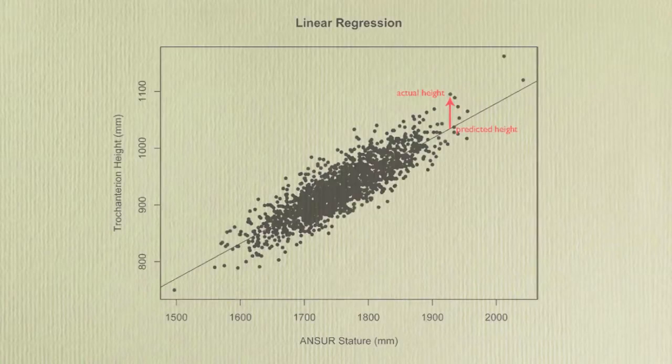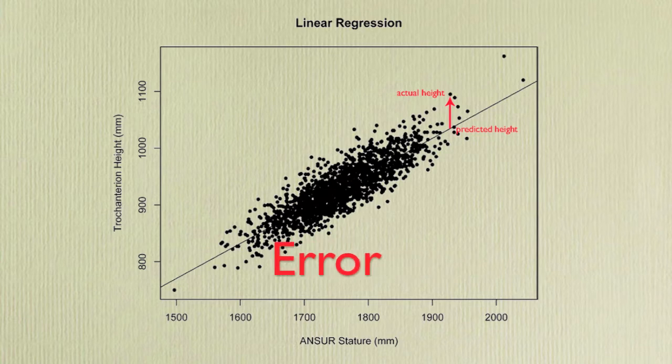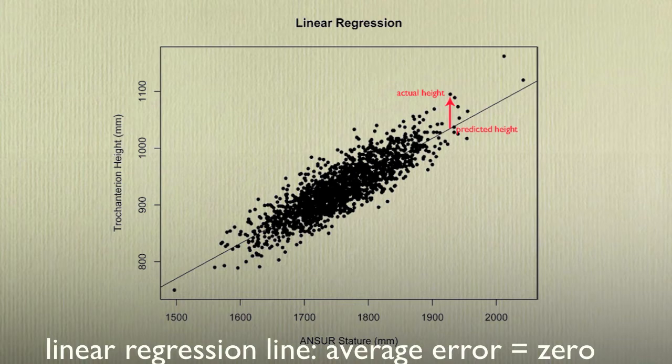Since we would like our synthesized data to have the variability of a real population, we are going to include a term called residual variance in our linear model. Residual variance is the variance of the data that is not explained by the linear regression equation. We can predict this variance by using the ANSWER data. For each data point, there is a difference between the trochanterian height of the person and the trochanterian height that the regression model would predict based on that person's stature. This difference is called the error.